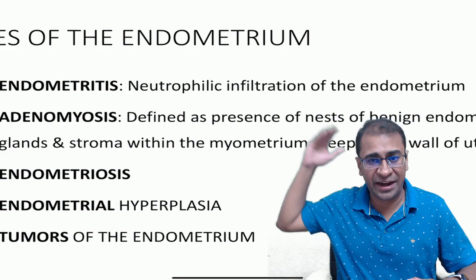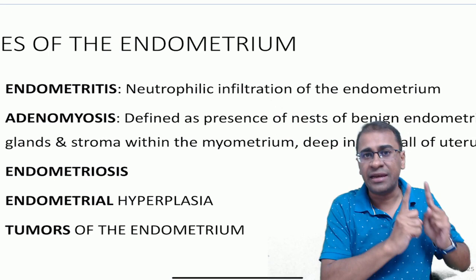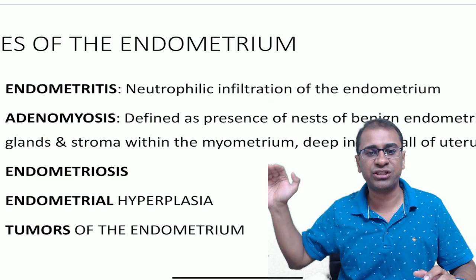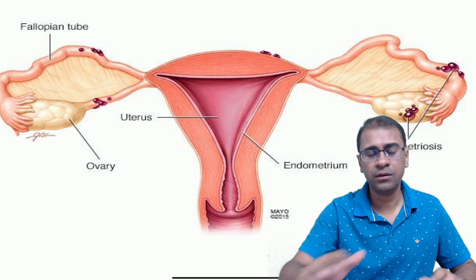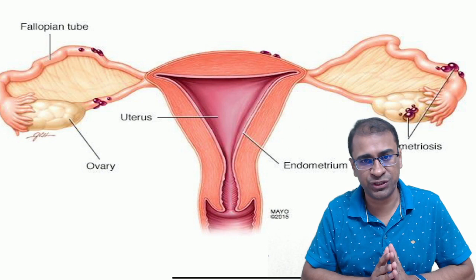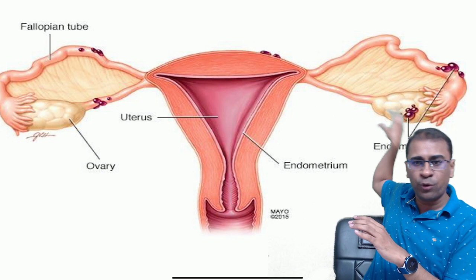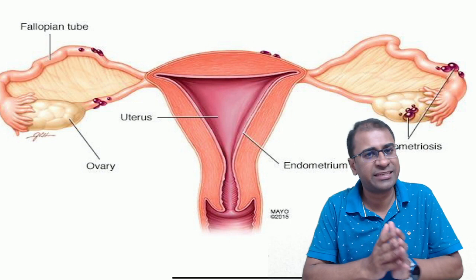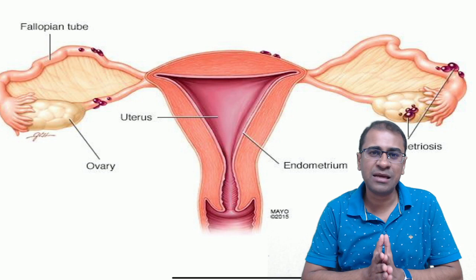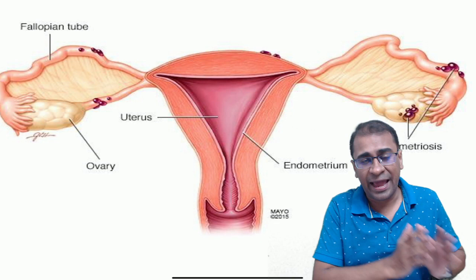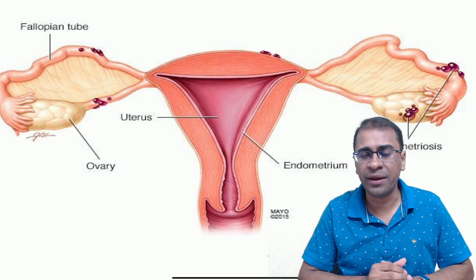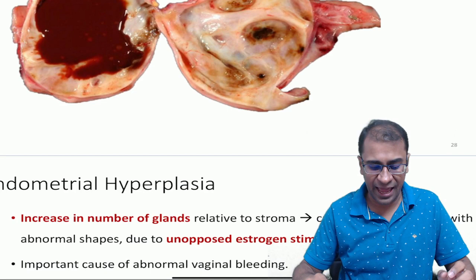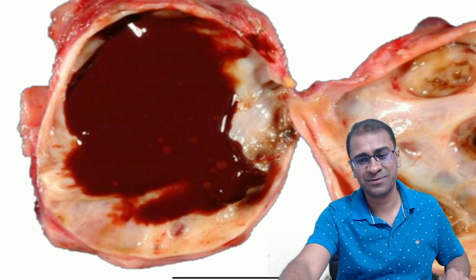Moving on to diseases of the endometrium. These are grouped into endometritis, which means neutrophil infiltration; adenomyosis, which means benign nests of endometrial cells in the myometrium; endometriosis, which we will see separately; endometrial hyperplasia; and tumors of the endometrium called endometrial carcinoma. The basic concept of endometriosis says it is often due to regurgitation of menstruation — the menstrual flow while passing through the fallopian tubes keeps depositing on the ovary, hence called retrograde menstruation. Other theories include metaplasia, ectopic origin, and unknown origin. It often leads to pelvic pain, especially dysmenorrhea, adhesions in the lower abdomen causing huge pain and infertility. Sometimes these cysts can become brown in color and hence are called chocolate cysts.